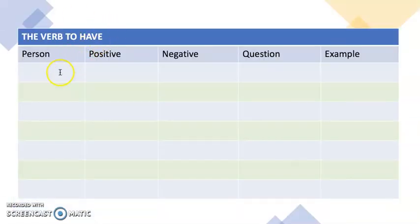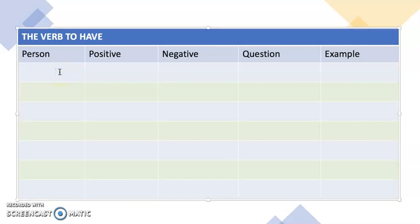So this is the verb to have. Now remember what I was saying about learning verbs: you must always look at all the different persons. So we have I, you, he, she, it, we, and they. Now the letter I is always a capital.